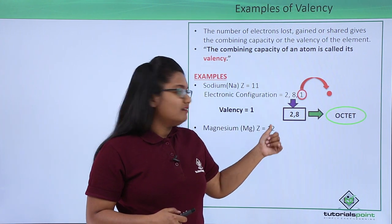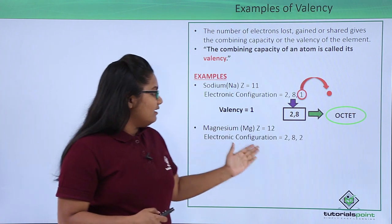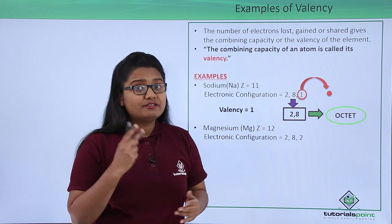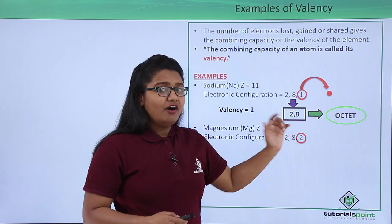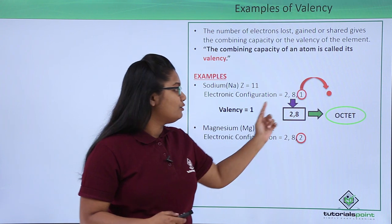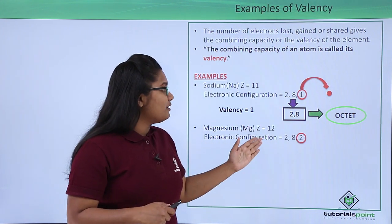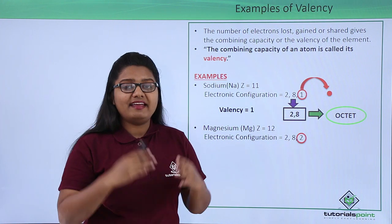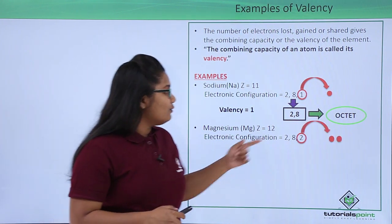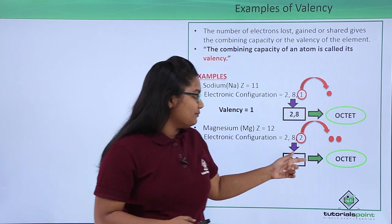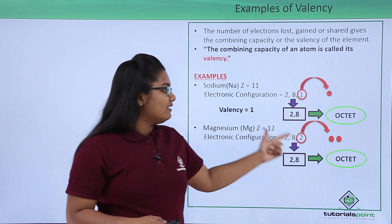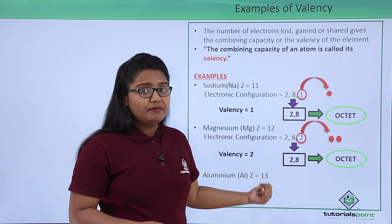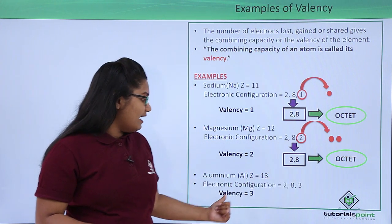The magnesium atom has an atomic number of 12, so its electronic configuration will be 2, 8, 2. Similarly, magnesium has two choices: lose these two electrons or acquire six more electrons to have an octet configuration. It prefers to lose two electrons rather than acquiring six, so it loses two electrons to get the octet configuration. Its valency is 2. Same applies to aluminium with atomic number 13 — it has to lose three electrons, so the valency is 3.